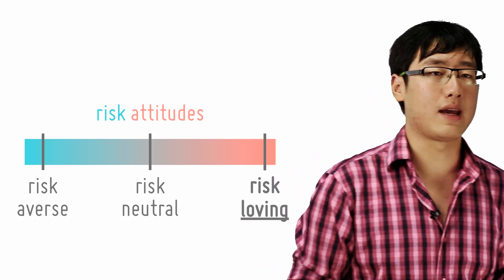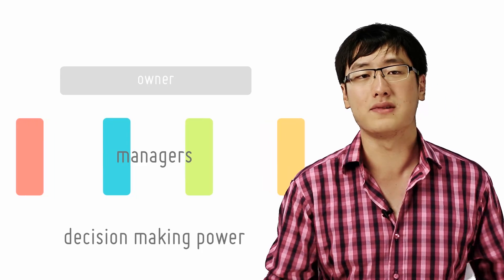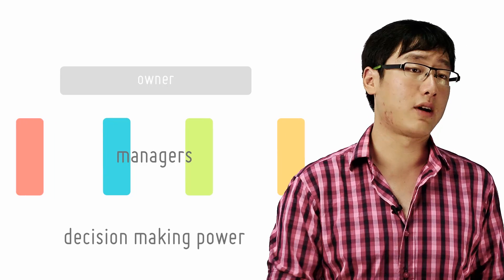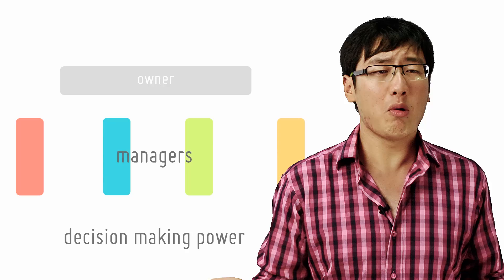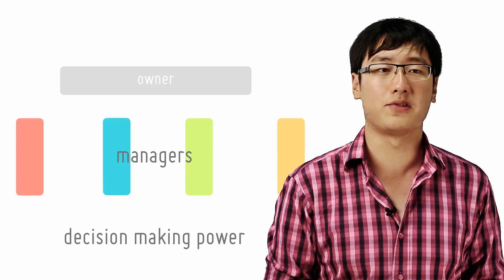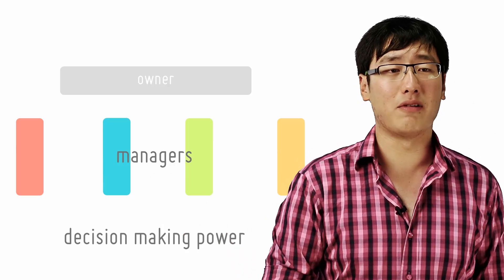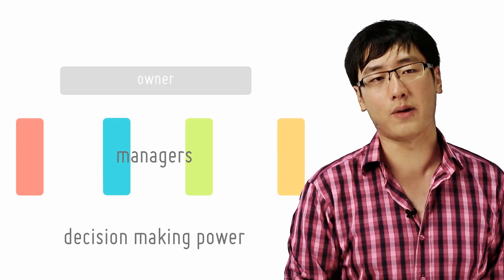The more dispersed the decision-making power is in the firm, the more worried managers are about their own survival and the more cautious their policies are. They will prefer to stick with products that are more popular and use tried-and-tested methods. And in the long run, the company will find that it is losing ground to more aggressive competitors.